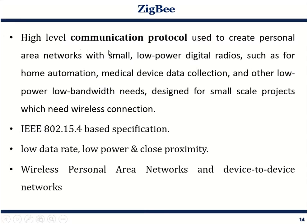Zigbee is a high-level communication protocol used for personal area networks, which is a small area. Since we are talking about a small area, it operates on low-power digital signals. It is widely used for home automation, medical data collection, device data collection, and other low-power, low-bandwidth applications. Zigbee protocol is based on IEEE standard 802.15.4.